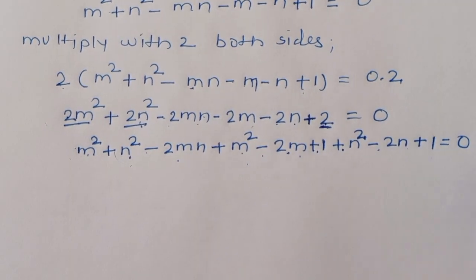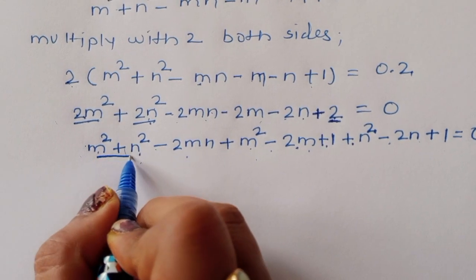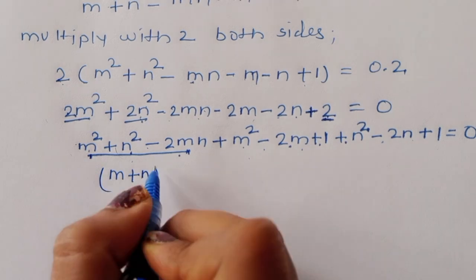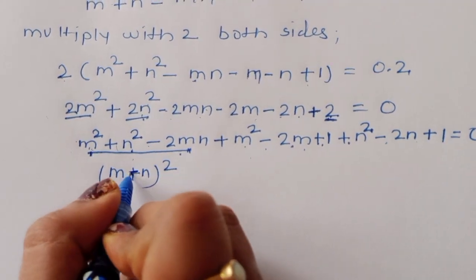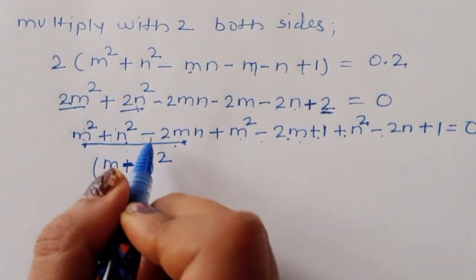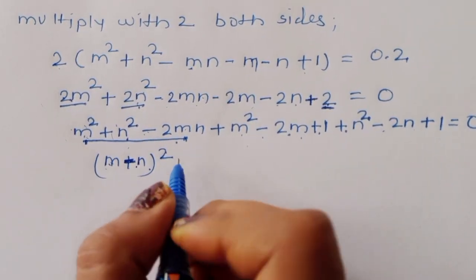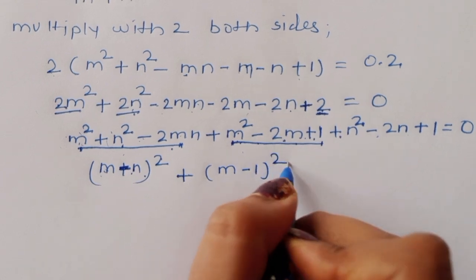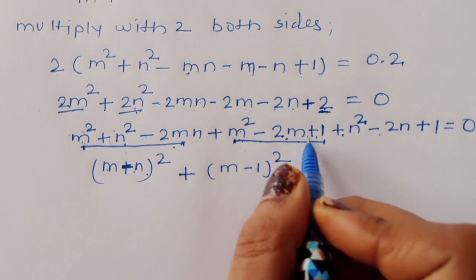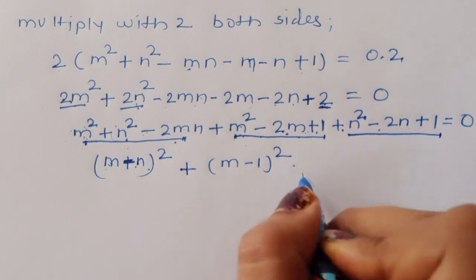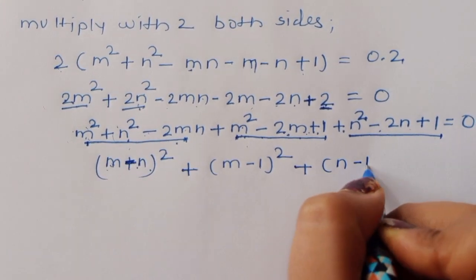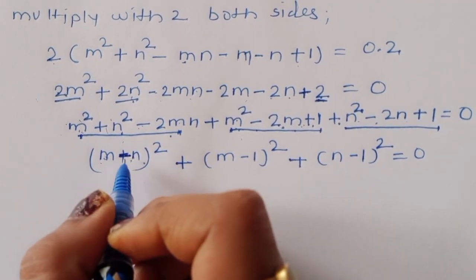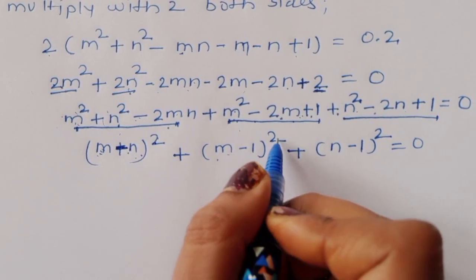You can see m² + n² - 2mn is the formula for (m - n)², so we write (m - n)². Then m² - 2m + 1 is (m - 1)², and n² - 2n + 1 is (n - 1)². So the equation becomes: (m - n)² + (m - 1)² + (n - 1)² = 0.